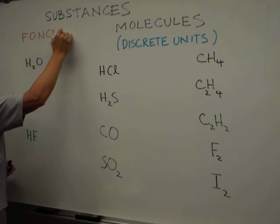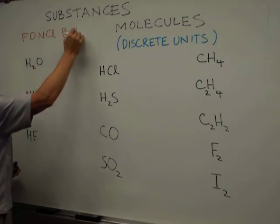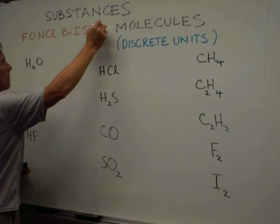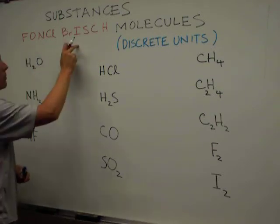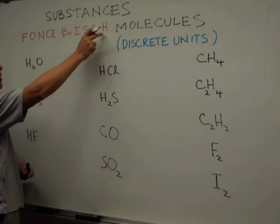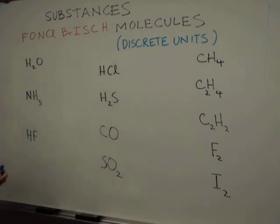F-O-N-Cl-Br-I-S-C-H, where fluorine is the most electronegative atom of these nine nonmetals, and hydrogen is the least electronegative atom of these nine nonmetals.